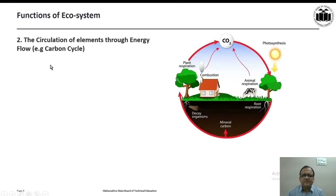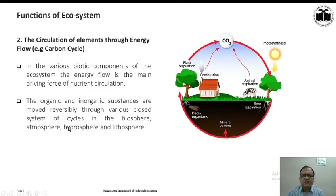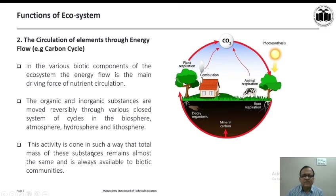The next function of ecosystem is the circulation of elements through energy flow, taking the carbon cycle as an example. Here is the flow diagram depicting the carbon cycle. In the various biotic components of the ecosystem, energy flow is the main driving force of nutrient circulation. Organic and inorganic substances are moved reversibly through various closed systems of cycles in the biosphere, atmosphere, hydrosphere, and lithosphere, so that the total mass of these substances remains almost the same and is always available to biotic communities.